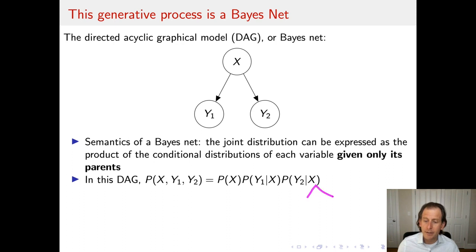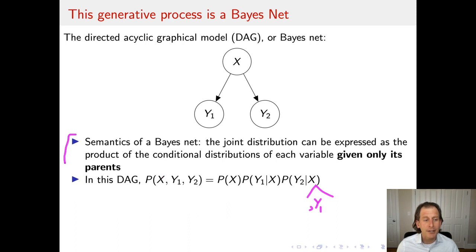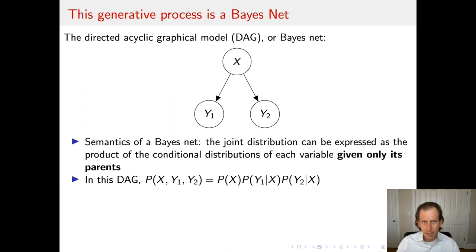Note that if I had included Y1 in the conditioning of Y2, I would have nothing more than vanilla probability theory — a chain rule decomposition of the joint into P(X), P(Y1|X), and P(Y2|X, Y1). What the Bayes net semantics is saying is that you can actually ignore some of the conditioning random variables, due to the conditional independencies the Bayes net is imposing. So we cross out the conditioning on Y1, and we're left with the Bayes net's factorization of the joint. This is a more constrained set of distributions, because Y2 must be conditionally independent of Y1 once X is conditioned on.